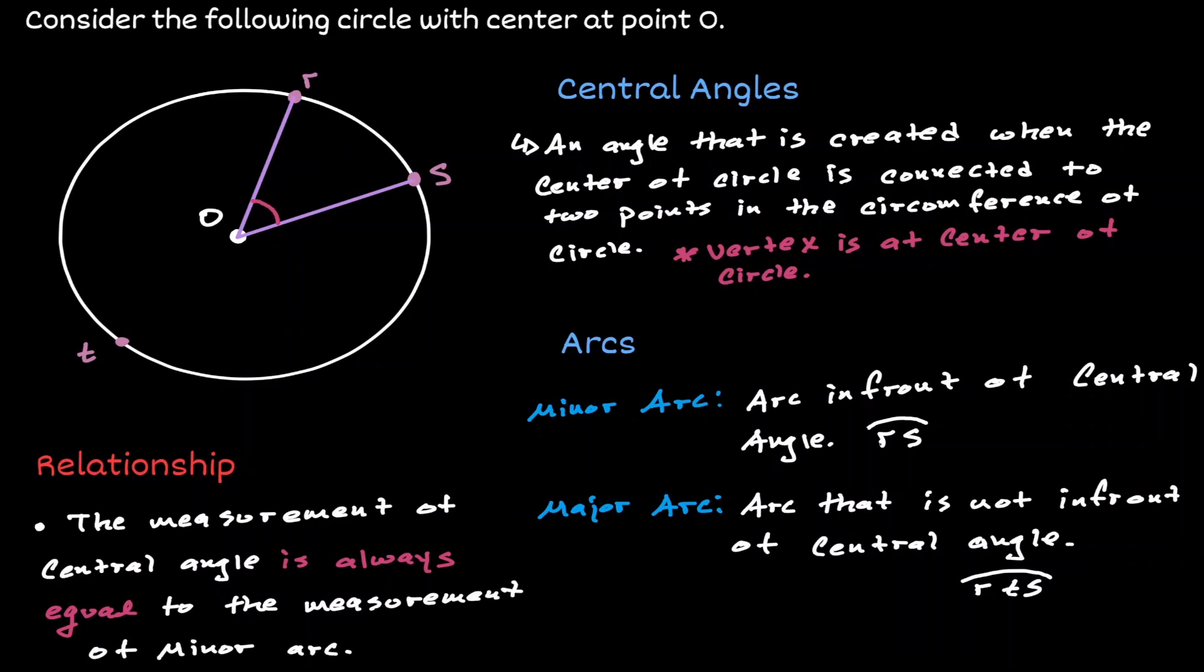So let's say that we give a variable to the central angle, let's call it X. Then what we are saying is that the measurement of angle X is equal to the measurement of the arc RS. And this will always be true.